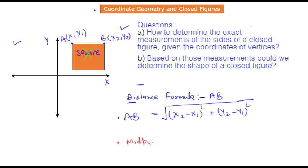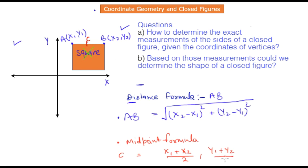There is one more thing you need to know: the midpoint formula. The midpoint formula helps us determine the coordinates of the midpoint of any line segment. If line segment AB has a midpoint C, the coordinates of C are: the x-coordinate is the sum of the x-coordinates of A and B divided by 2, and the y-coordinate is the sum of the y-coordinates divided by 2. Think of it this way — to find the midpoint of two numbers, you sum them and divide by 2.